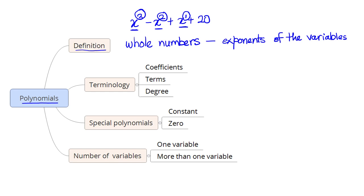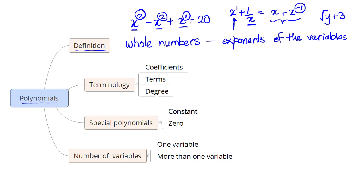Now let us look at algebraic expressions that are not polynomials. One example is x + 1/x + 1. The term 1/x can be written as x to the power minus 1, and minus 1 is not a whole number, so this is not a polynomial. Similarly, the square root of y + 3 is not a polynomial because y is raised to the power one-half, which is not a whole number.